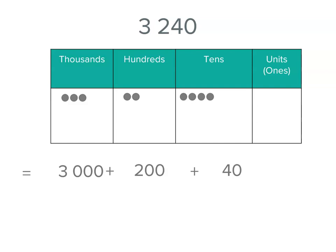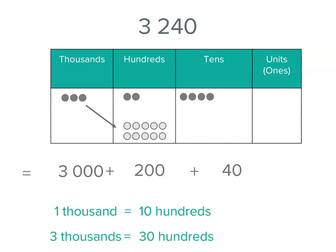But we can also rename things because remember 1,000 is the same as 10 of the hundreds. So I could take one of my thousands away and put 10 hundreds there. But I've got three of the thousands. So 3 times 10 is 30. So I've got 30 hundreds.